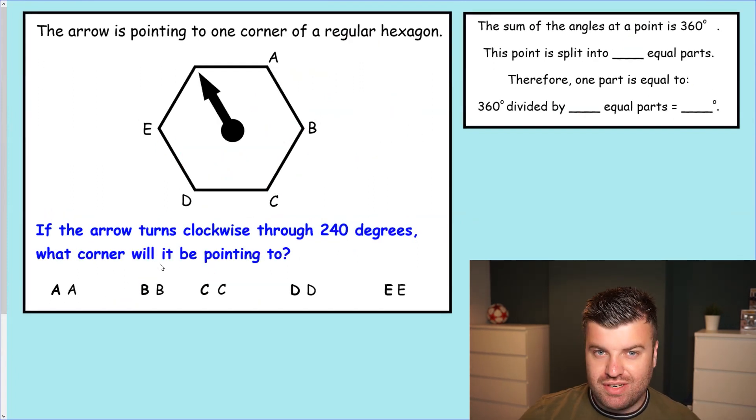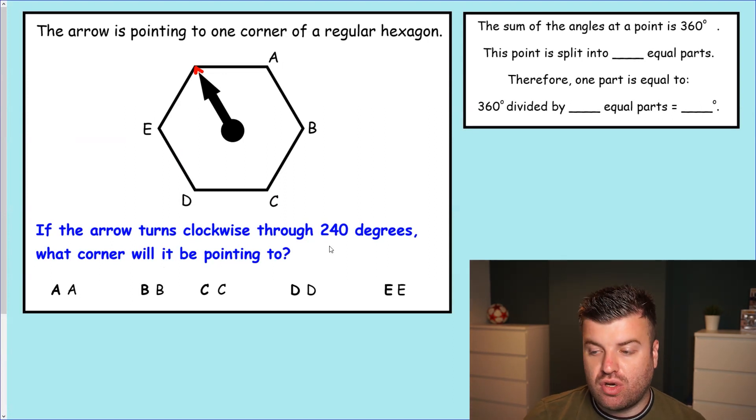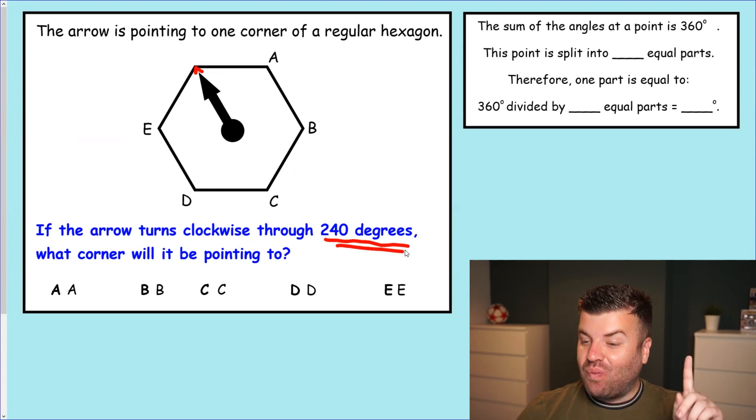Okay, so I'm going to set you up on a question that you're going to answer yourselves. And you'll notice that this question has inverted the way it's asked. Let me show you what I mean. The arrow is pointing to one corner of a regular hexagon. We can see it's pointing up here. It's not labelled. That doesn't matter. If the arrow turns clockwise through 240 degrees, what corner will it be pointing to? Can you see how it's inverted? It's swapped. It's giving you the degrees. You need to tell me where it ends up.